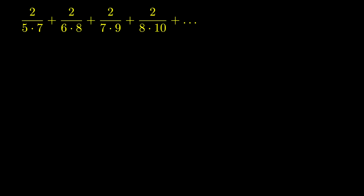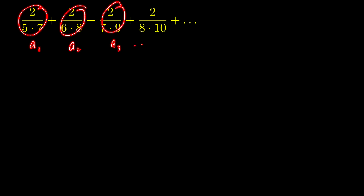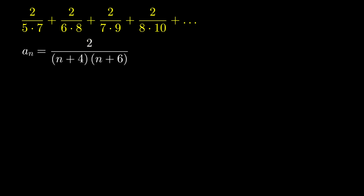First, let's find a formula for the terms of this series. Let's say that this one is our first term, denoted by a1, this is a2, this is a3, and so on. So the formula for the nth term of this series, clearly it is equal to a sub n, which is equal to 2 over (n plus 4) times (n plus 6).